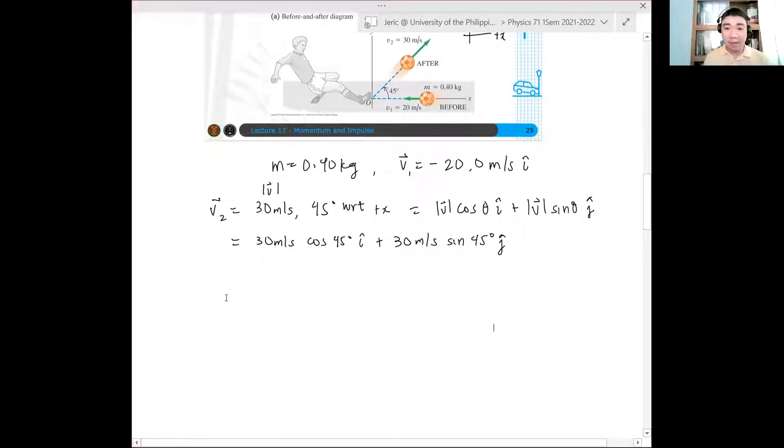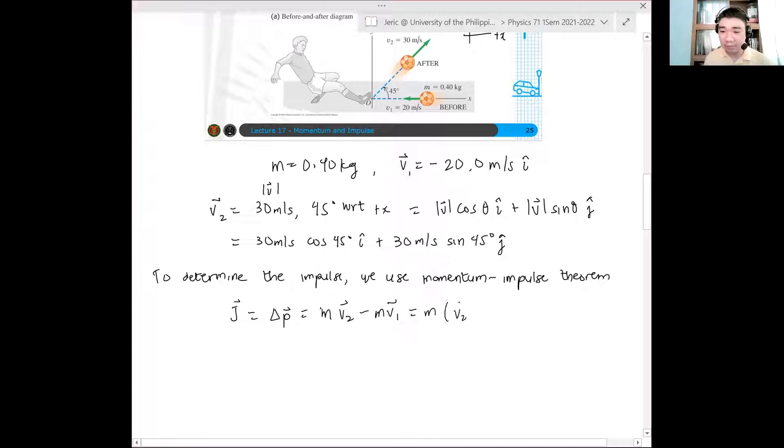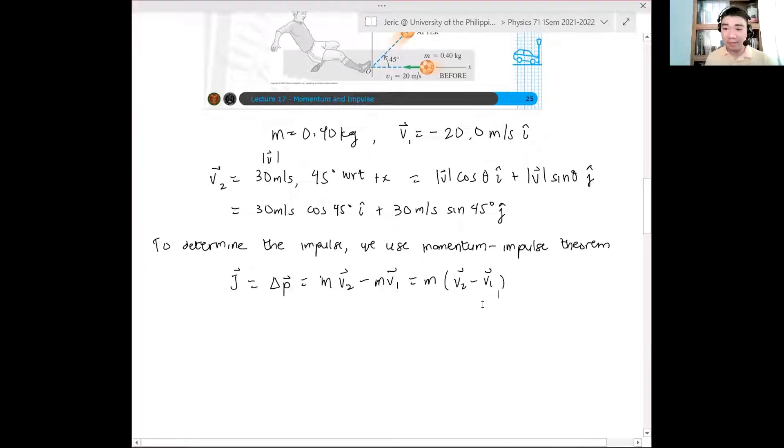Now, the impulse, to determine the impulse, we use the momentum impulse theorem. But this J is simply delta V vector, which is simply quantity V2 vector minus V1 vector. Okay? Now, we plug in the numbers that we have.